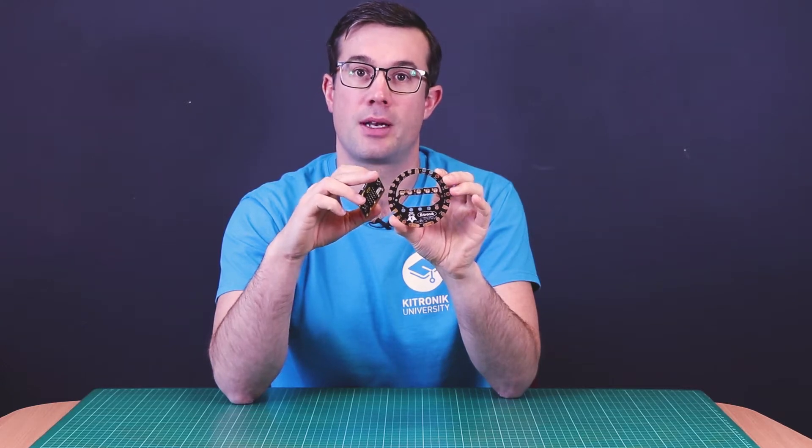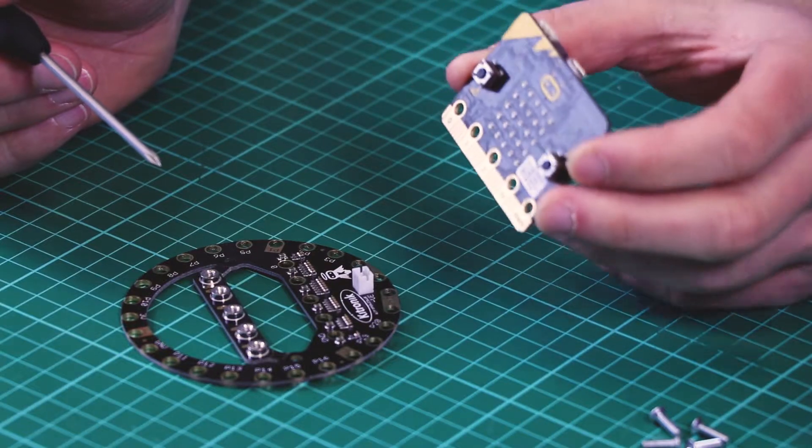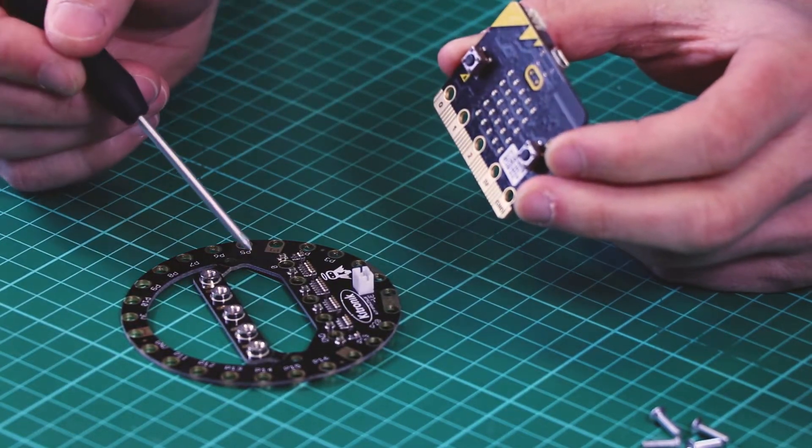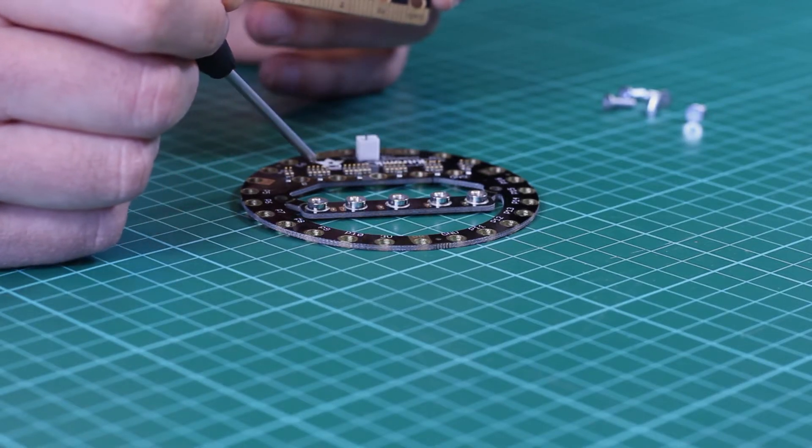This allows us to easily use clip leads or conductive thread with the BBC micro:bit. It's very simple to mount the micro:bit to the Clip Halo. The pins here connect onto these spring connectors on the back of the Clip Halo.